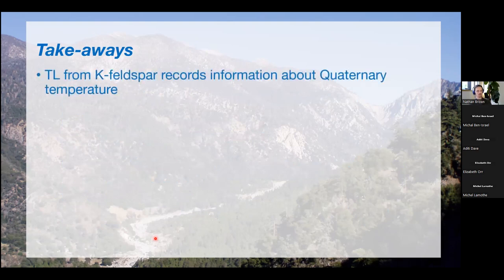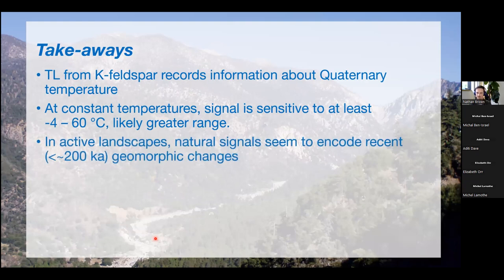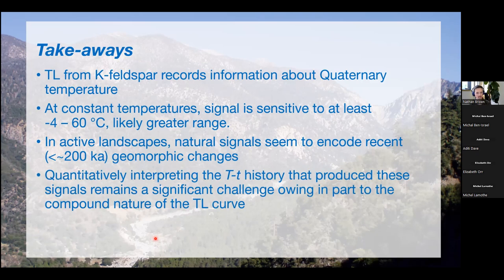The takeaways. Thermal luminescence from K. Feldspar grains records rich information about a sample's quaternary temperature history. When these samples are at constant temperatures, the signal is observed to be sensitive to temperatures ranging from negative 4 to 60 degrees annual temperature. In active landscapes, these signals do seem to encode recent geomorphic changes. Again, we can't look farther back in time than about 200,000 years, but in most actively eroding regions, this is a really useful time scale. And quantitatively interpreting this time temperature history that produced the observed signals remains a significant challenge, at least partly because of the compound nature of the TL curve. A lot of our thermal chronometers are overlapping in their emissions, and so disentangling that is quite a challenge.